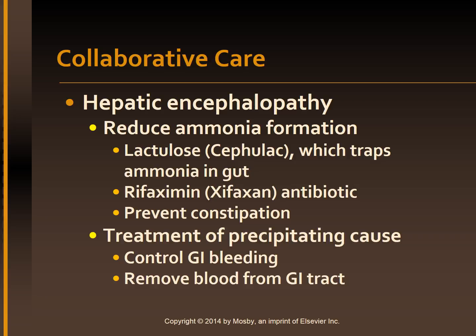Hepatic encephalopathy: The goal of management is the reduction of ammonia formation. Ammonia formation in the intestines is reduced with lactulose, which traps ammonia in the gut. It can be given orally, as an enema, or through a nasogastric tube. The laxative effect of the drug expels ammonia from the colon. Non-absorbable antibiotics such as neomycin, metronidazole, and rifaximin may also be given in patients who do not respond to lactulose, as they destroy normal flora in the bowel, reducing the protein load. Constipation should be prevented. Control of hepatic encephalopathy also involves treating precipitating causes, including controlling GI bleeding and removing blood from the GI tract to decrease the protein load in the intestines.